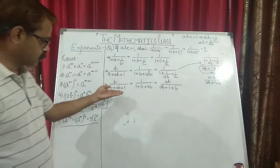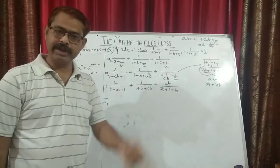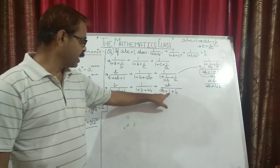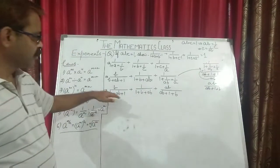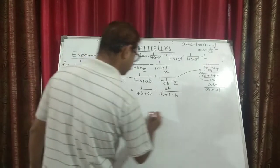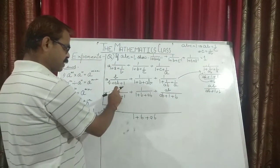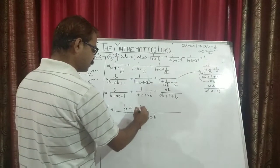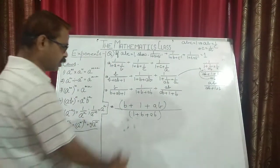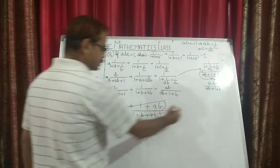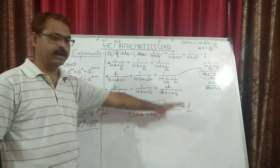If you look at these numbers, all the denominators are the same — having the same three terms: 1, b, and ab. Taking LCM gives 1 plus b plus ab. The numerators sum to b plus 1 plus ab, which equals the denominator. So numerator and denominator cancel, and the final value is 1 — which was required to be shown. That has been proved.